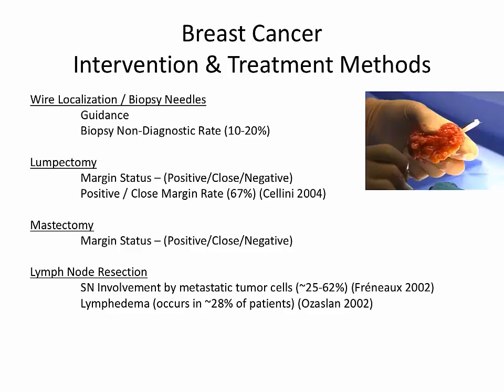The same application applies to mastectomy specimens. The last application is looking at lymph nodes. Axillary lymph node dissections are the common second part of surgery during breast-conserving surgery, mostly used for staging purposes to see if the cancer has metastasized to the lymph node. The rate of nodes that actually turn out to have metastatic cancer cells is very low, so we're removing lymph nodes and disrupting the lymphatic network when most of the time it's a normal lymph node. By preserving that network, we can hopefully reduce complications such as lymphedema, which happens in 28 percent of patients.